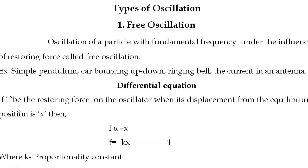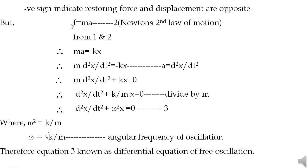Now we discuss the differential equation of free oscillation. Let F be the restoring force acting on the oscillator when its displacement from the equilibrium position is x. Then F is proportional to minus x, so we write F = −kx (equation 1), where k is the proportionality constant and the negative sign indicates that force and displacement are in opposite directions. From Newton's second law, F = ma (equation 2).